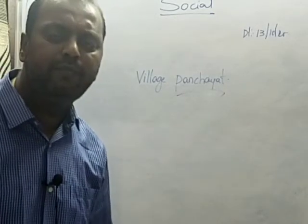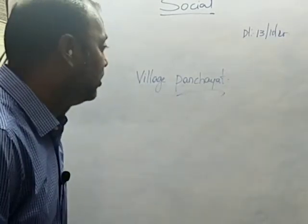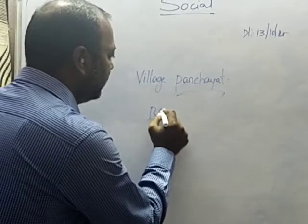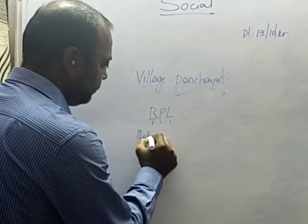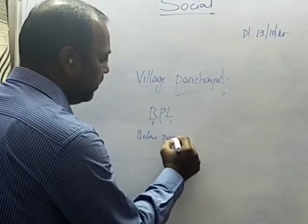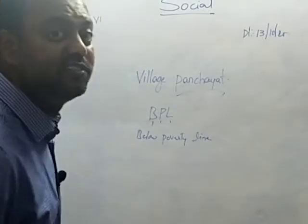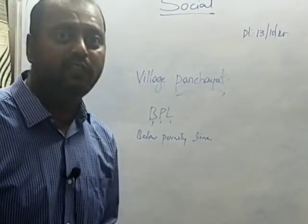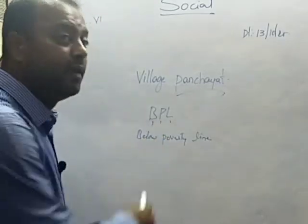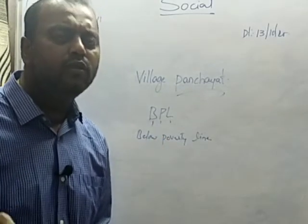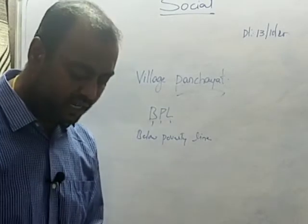When the list of BPL people is prepared — BPL meaning below poverty line — ration cards are given to them. Ration cards are food security cards, and through these, rations are provided. These BPL families in the entire village are identified, and finding out how many people in the village are below poverty line is the work of the Grama Sabha.